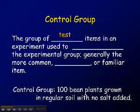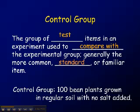What you're getting then is a control group, which is a group of test items in an experiment that are used to compare with the experimental group. This is generally the more common, standard, or familiar item — what normally happens, what you'd expect all the time. On average, this is the normal thing.